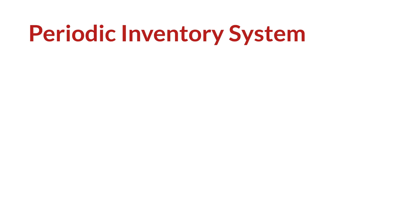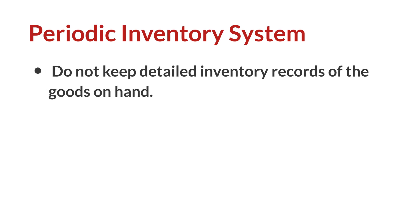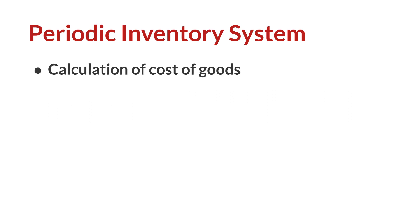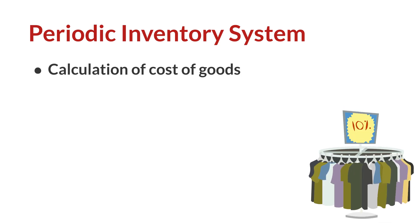In a periodic inventory system, companies do not keep detailed inventory records of the goods on hand throughout the period. They determine the cost of goods sold only at the end of the accounting period, or periodically. At the end of the period, the company takes a physical inventory count to determine the cost of goods on hand.